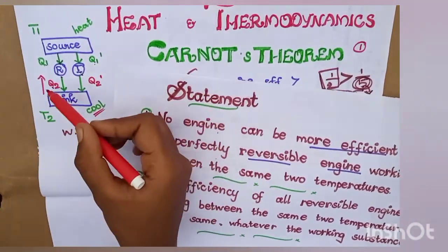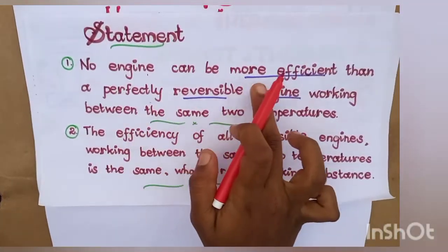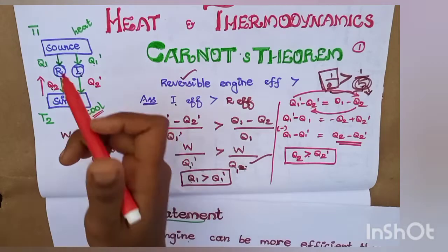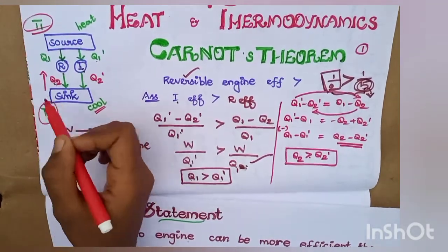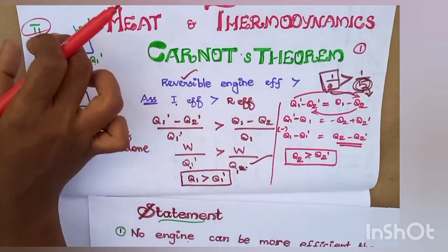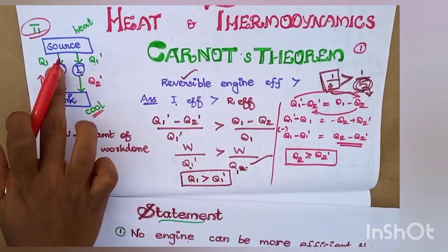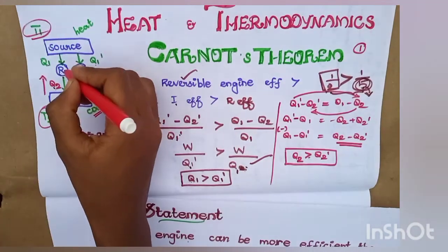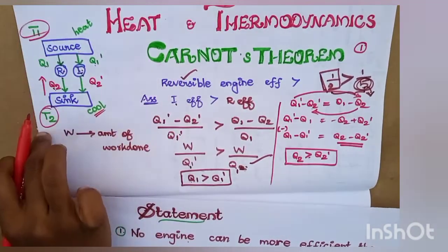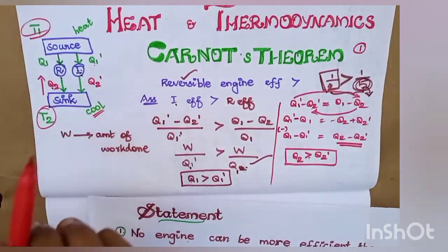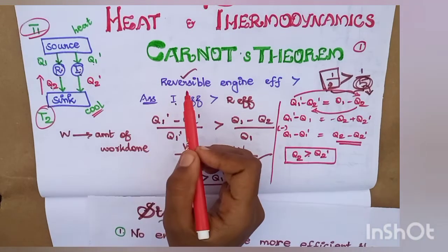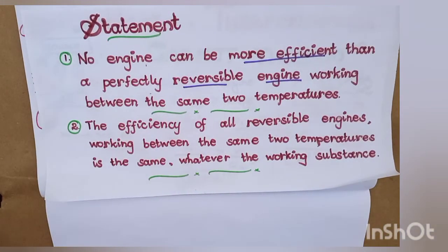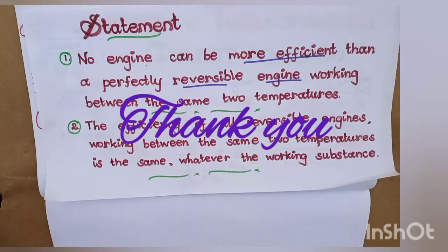Why? Q1 is greater than Q1', then Q2 is greater than Q2'. So who is more efficient? The reversible engine, working between the same two temperatures T1 and T2. The reversible engine and irreversible engine have the same temperature difference T1 and T2. Therefore, the assumption that the irreversible engine is more efficient leads to a contradiction, proving the first statement of Carnot's Theorem.